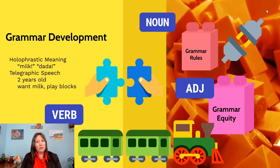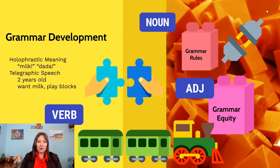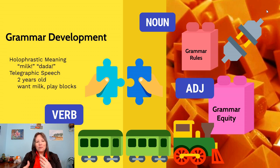Does 'milk' mean they want milk, the milk fell over, or they like or dislike milk? You need context. Holophrastic meaning is usually one word or just part of one word as a complete thought. It's incomplete grammar, to say the least, but it's age-appropriate grammar. Around two years of age, we move on from holophrastic meaning to telegraphic speech.